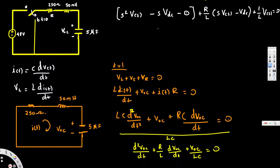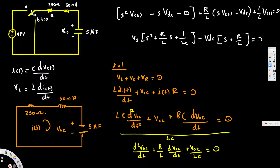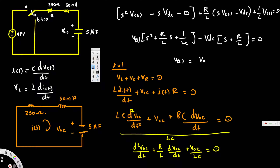Now let's collect the like terms. Taking V(s) common gives us: V(s)·[s² + (R/L)s + 1/LC]. Taking the −Vdc terms common gives: −Vdc·[s + R/L] = 0. Solving for V(s): V(s) = Vdc·(s + R/L) / (s² + (R/L)s + 1/LC). We have now converted everything into the Laplace domain.